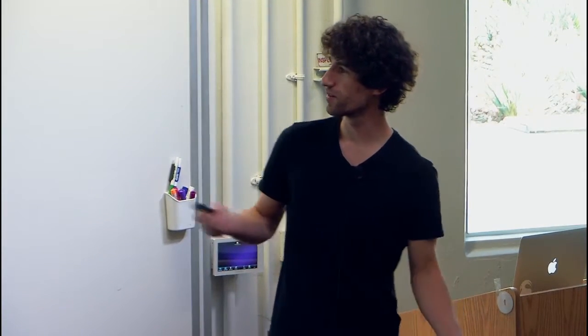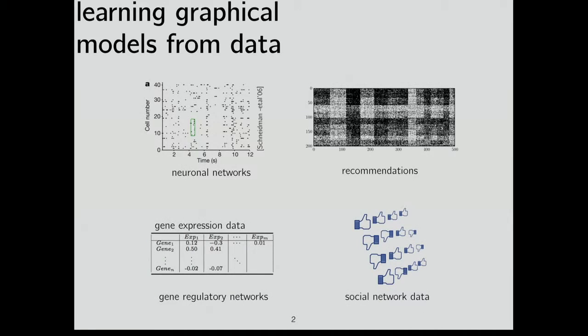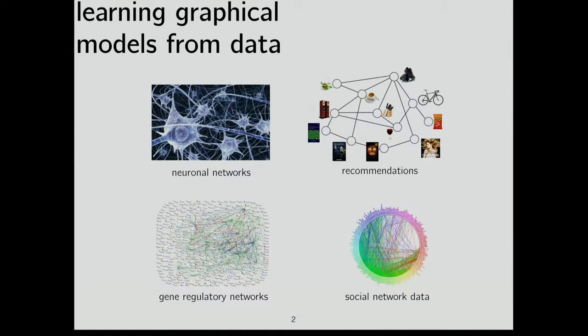To motivate the talk: we're talking about learning graphical models. Although once you have a graphical model, you can do a lot of nice things like run MCMC and compute posteriors, which is of interest in machine learning, often you don't have the model. What you have is something like a giant matrix of data, and what you would like is a model. So we'll be talking about how to go from data to model.